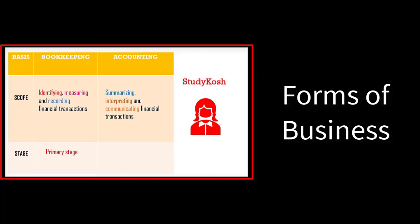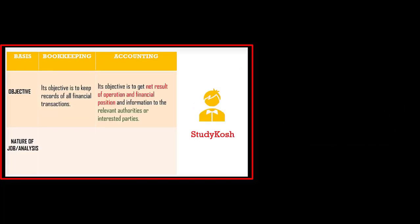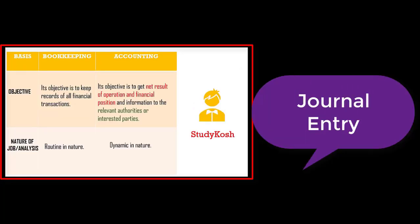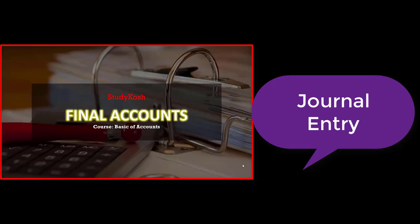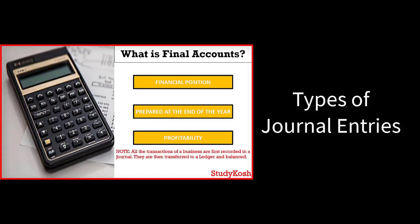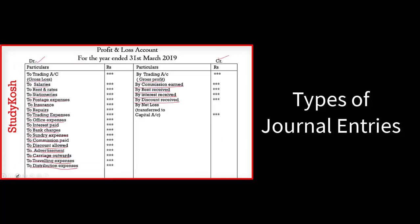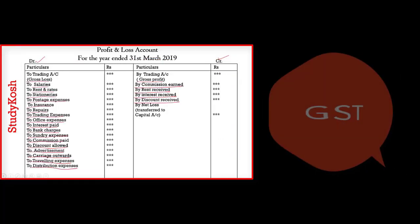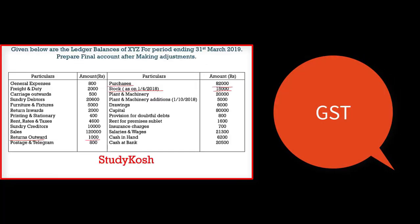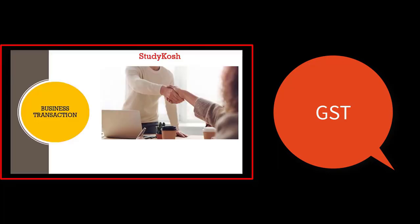Then forms of business — how many forms of business are there? After that, journal entry, which is very important. What is journal entry and how many types of journal entries are there?